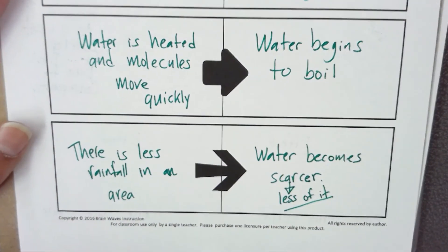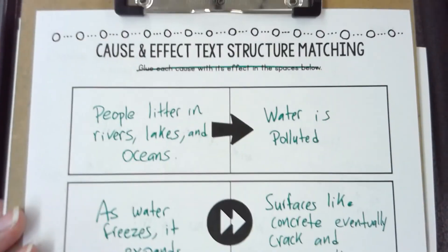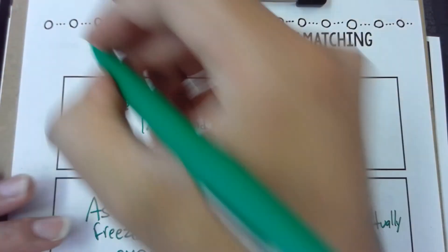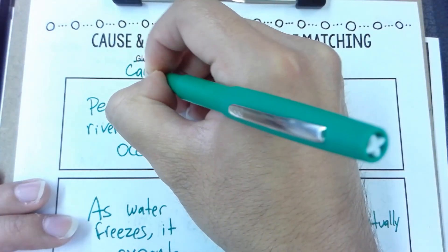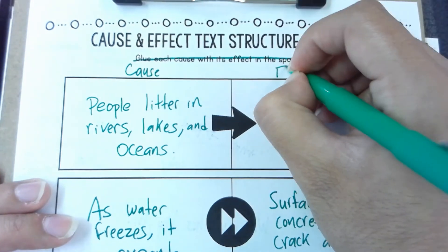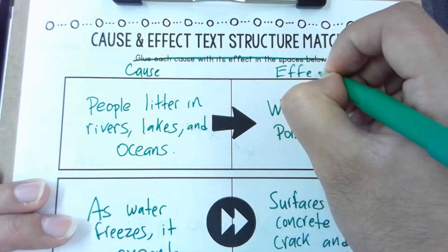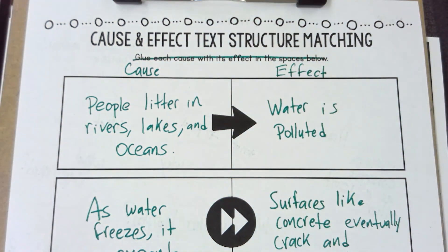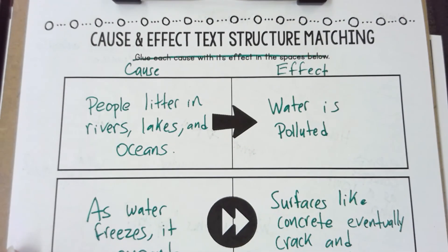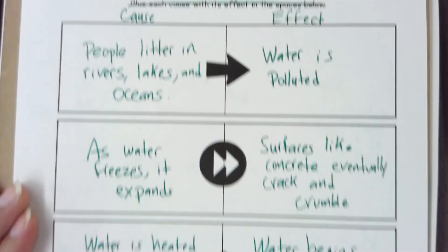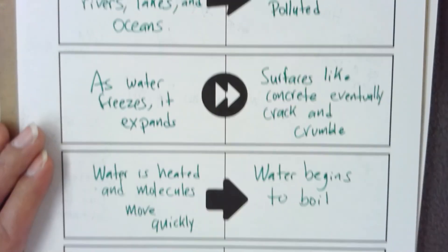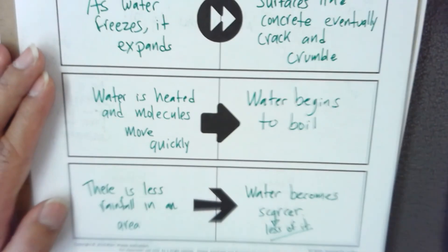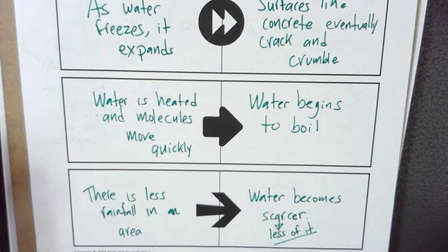Now we're going to go back and label this column 'cause' and 'effect' on the other side. Please make sure that whenever you're done writing down your causes and effects for each scenario, you turn this in to the turn-in bin. Great job — thank you for following along. Make sure you wrote your name and put this in the turn-in bin.